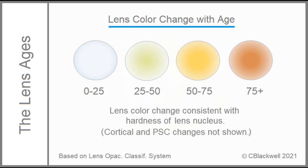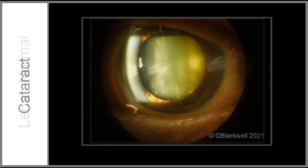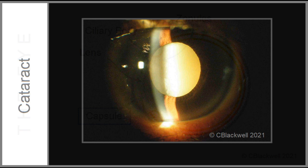This is looking into a normal eye through a dilated pupil using a microscope with a bright slit beam of light coming from the left side. The cornea is the curved vertical bar on the left. On the right is the lens outlined with dashed lines. This is a youngish, relatively clear lens. This is a middle-aged, mild to moderately cloudy and yellowed lens. This is a late-stage, densely cloudy lens.